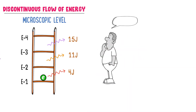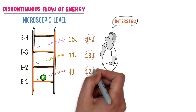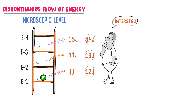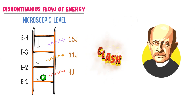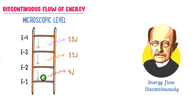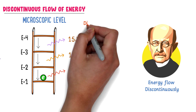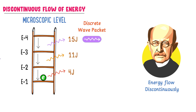Now listen carefully. Suppose I want the electron to lose only 14 joule when jumping from the fourth to the third energy level, only 13 joule from the third to the second, and only 12 joule from the second to the first — meaning I want the flow of energy to be continuous according to my wishes. Is this possible? No — Max Planck states that it is not possible. Energy flows in a discontinuous manner at the microscopic level. When an electron jumps from the fourth to the third energy level, it loses a fixed amount of 15 joule energy in the form of a discrete wave packet, just like a chocolate packet.